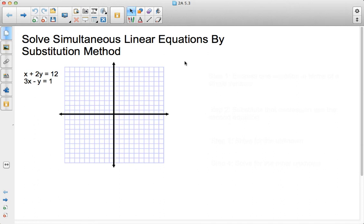Now we're going to be talking about solving simultaneous linear equations by using substitution. We could solve this graphically, and we've done that before, by taking the linear graph of x plus 2y equals 12, and 3x minus y equals 1.